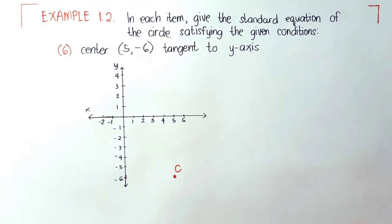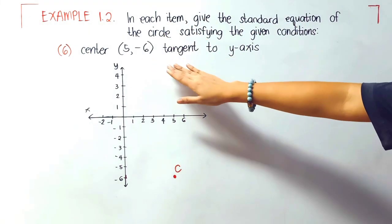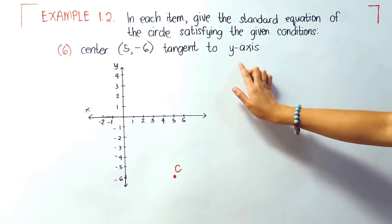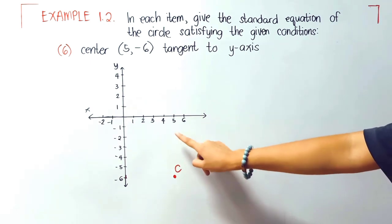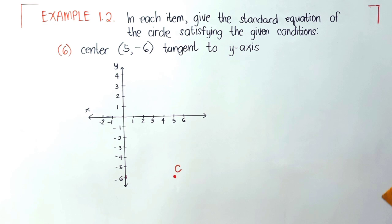We are done answering problems 1 to 5, so we'll have problem 6. We have here center 5 negative 6, tangent to y-axis. Let us plot that one first, 5 negative 6.